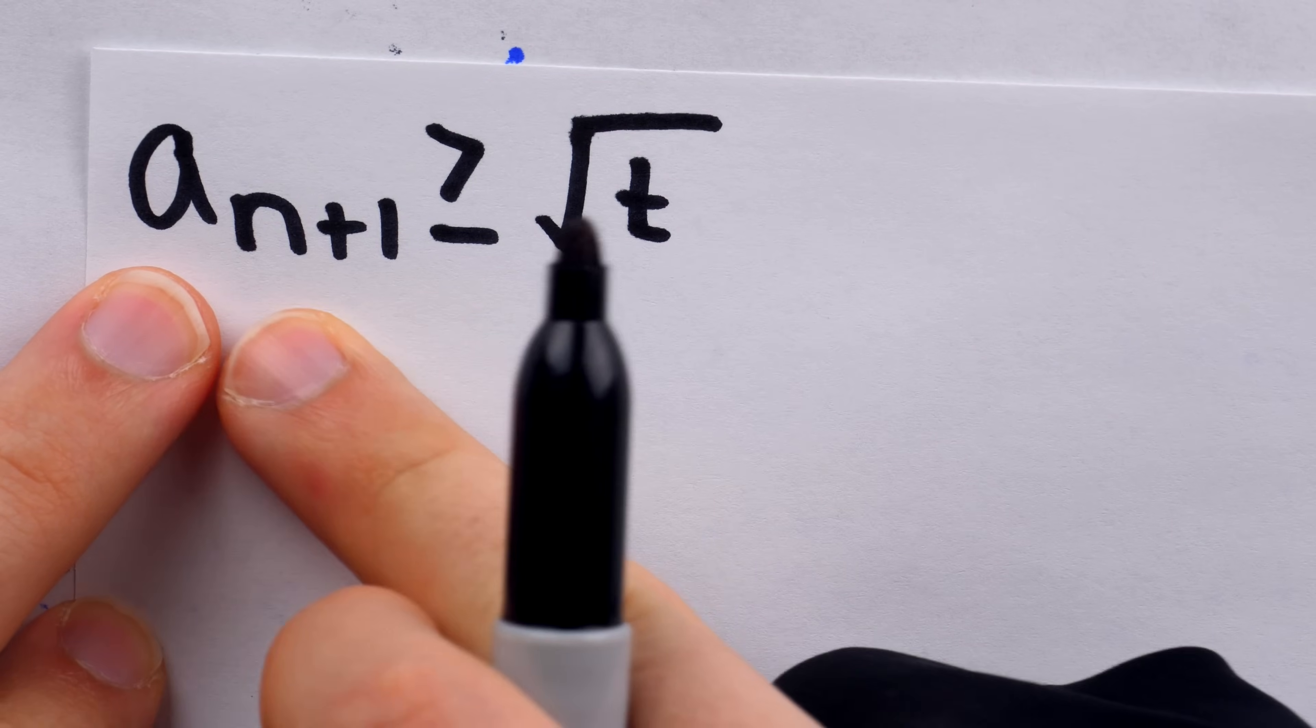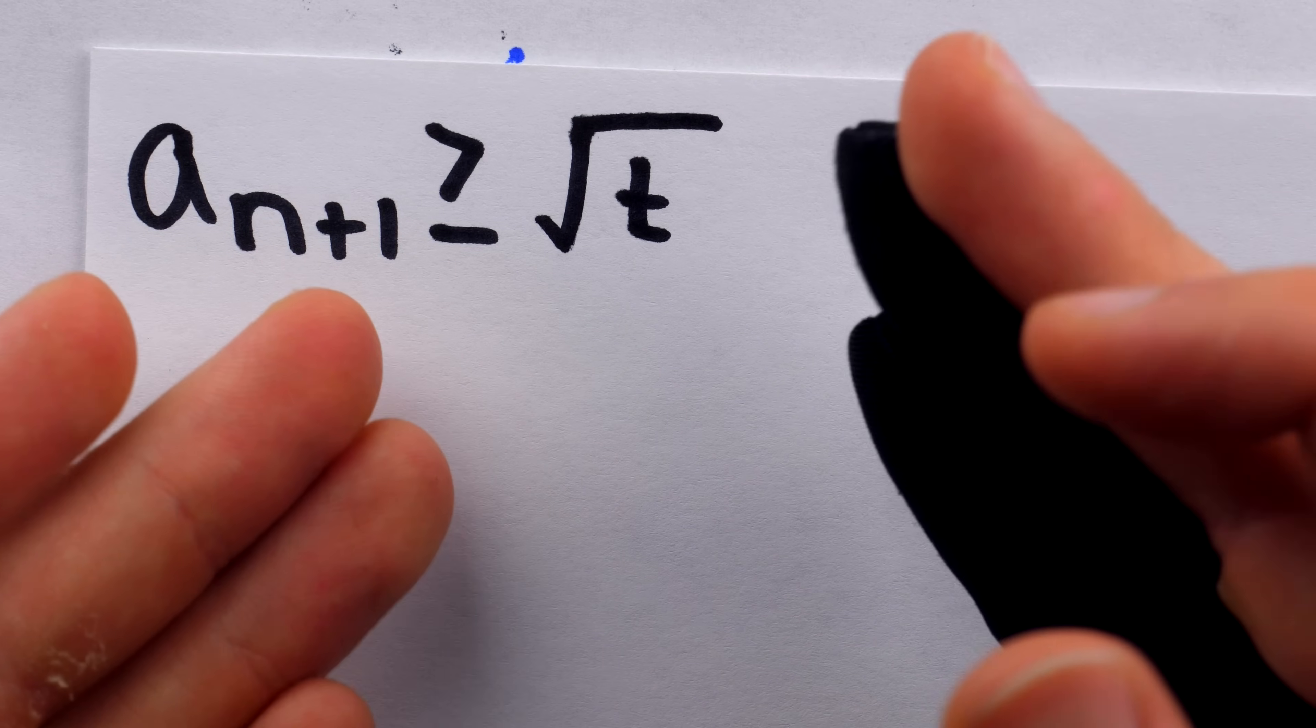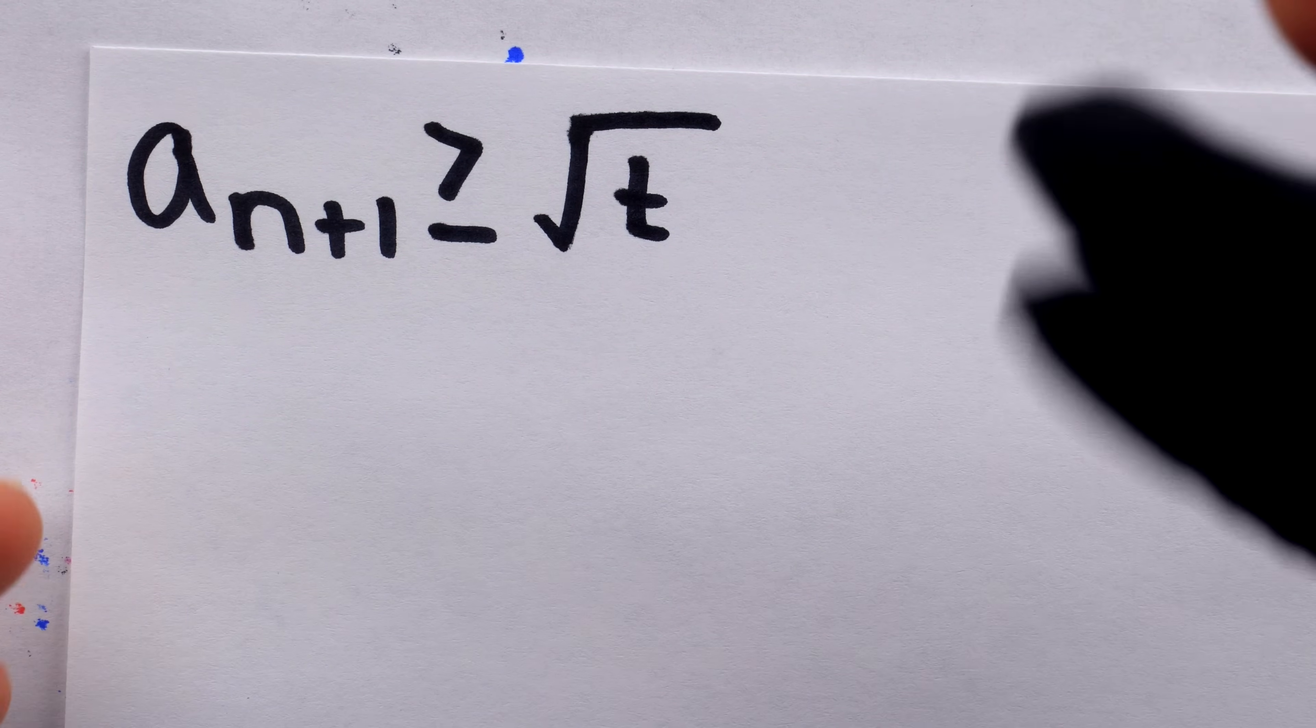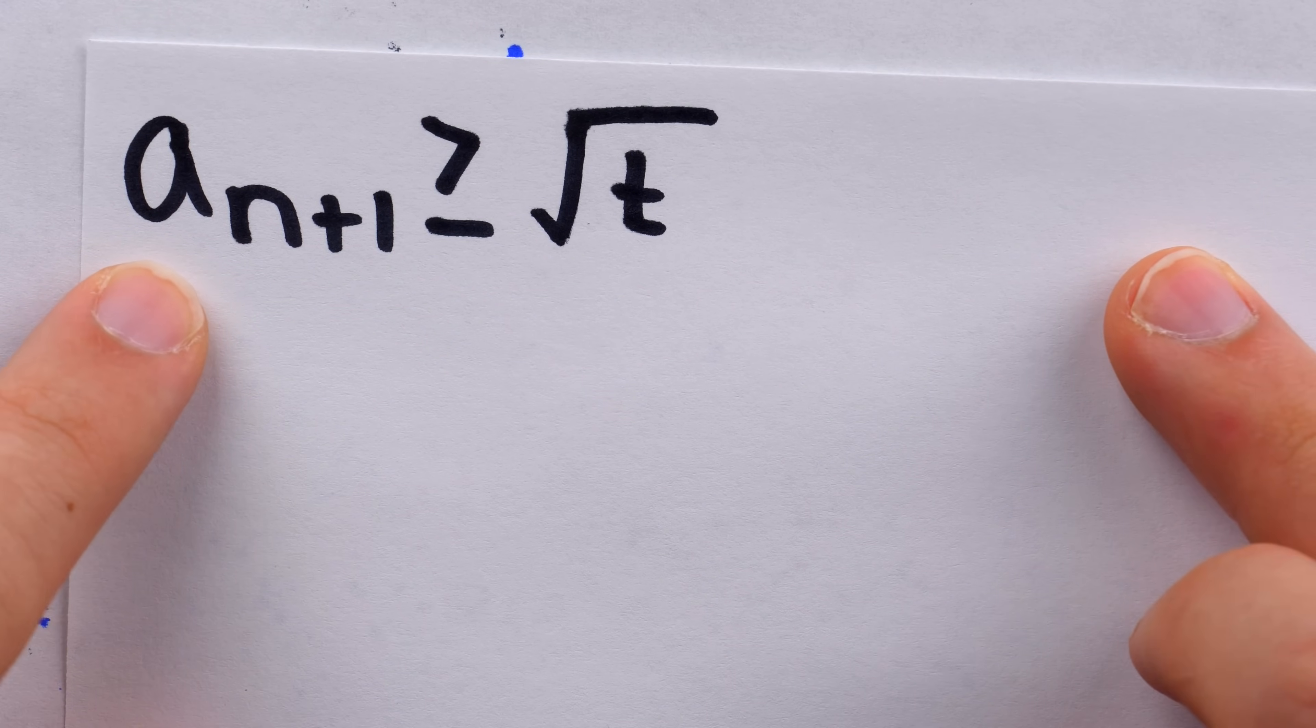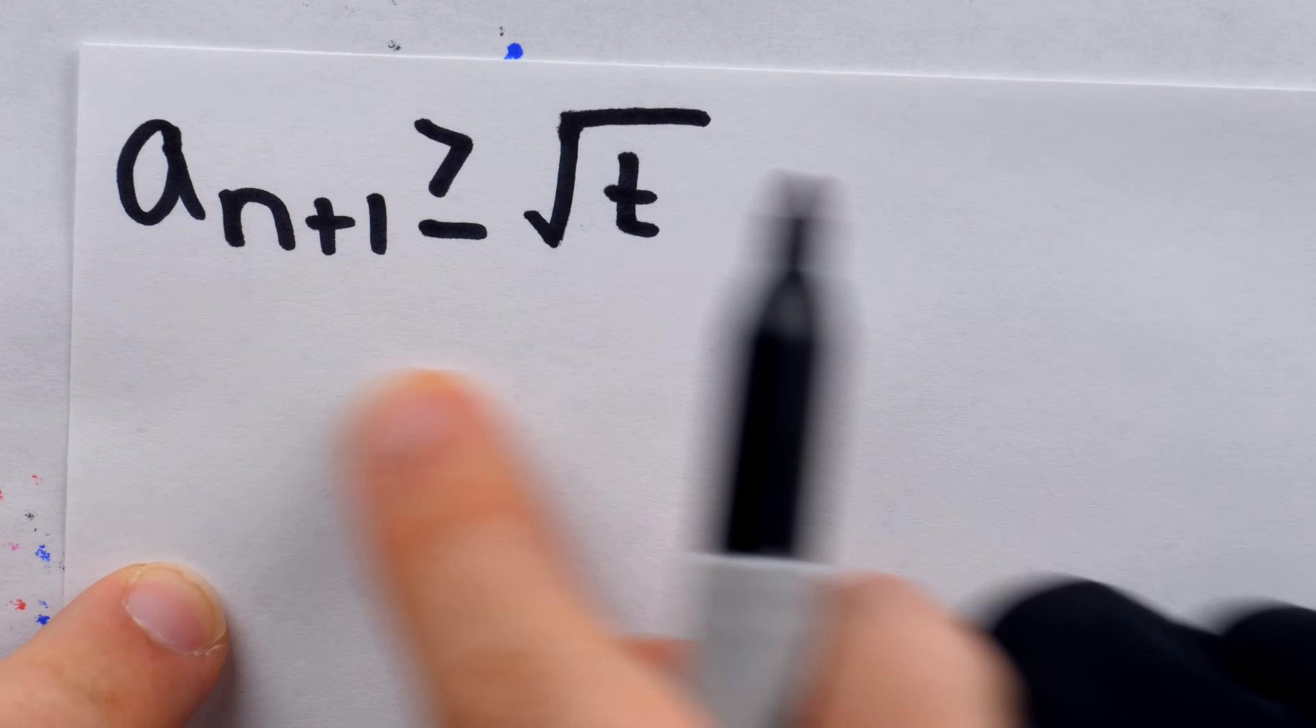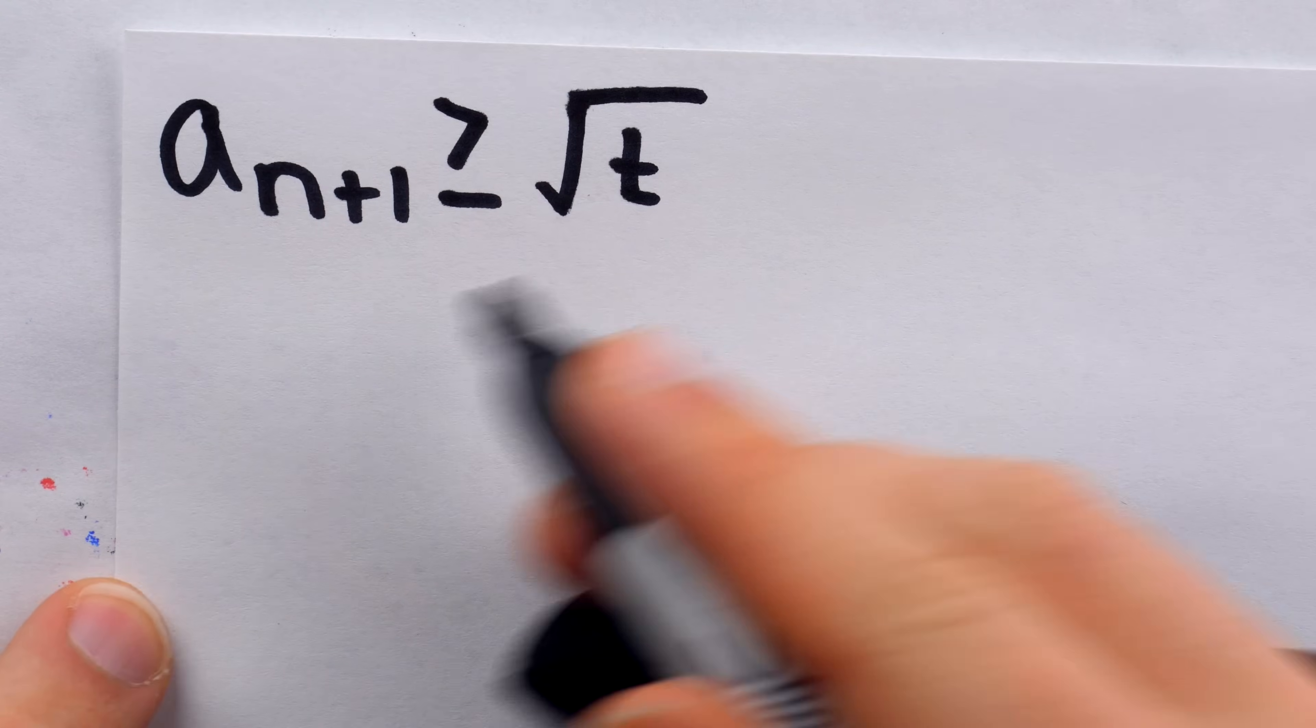Now, notice by writing a n plus 1, we are skipping over the first term. The first term, since it's just an initial guess, might be less than the square root of t. But after that, the terms of the sequence will be bounded below by this number. And for sequence limits, it's that long-term behavior that matters. It's not a big deal that the first term might not behave that way, as long as all the terms after a certain point do.